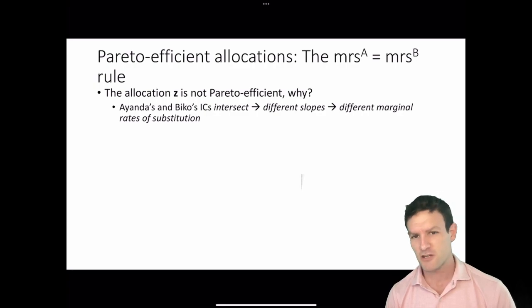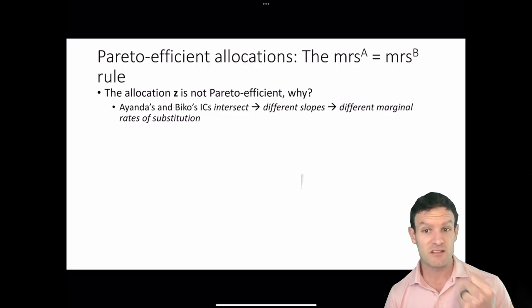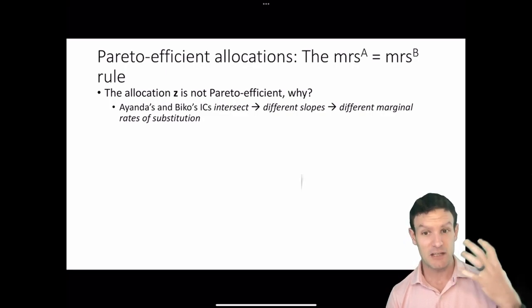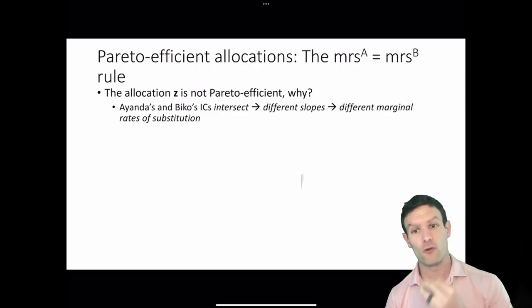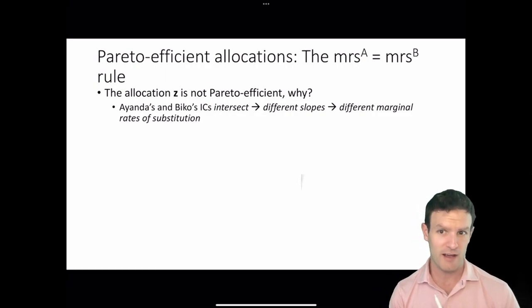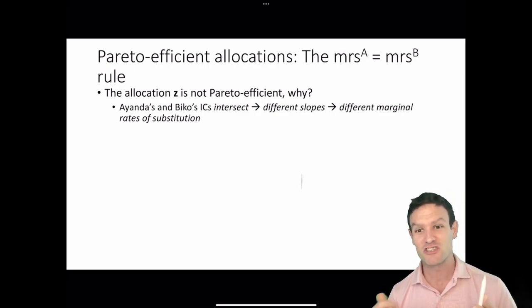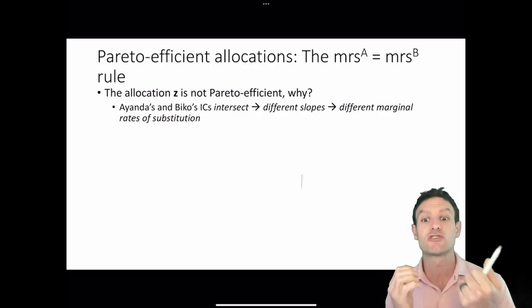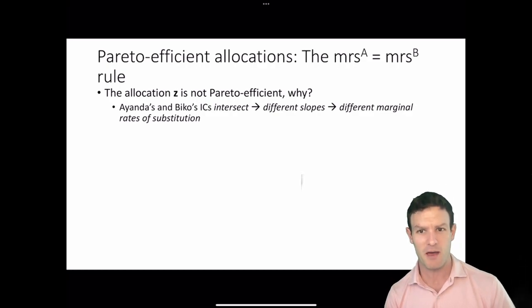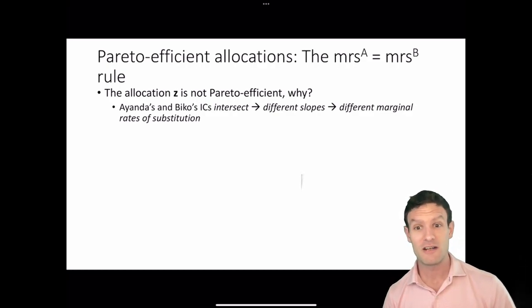It means they're Pareto inefficient because the two players have different willingness to pay. If Ianda's willingness to pay in good Y for good X is not equal to Biko's willingness to pay in good Y for good X, that means there are opportunities for them to exchange their goods until their willingness to pay are equal.